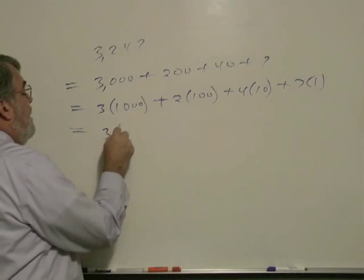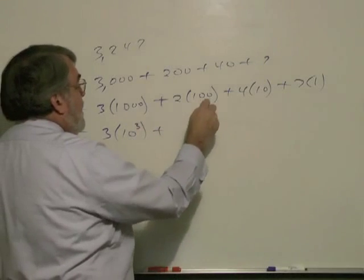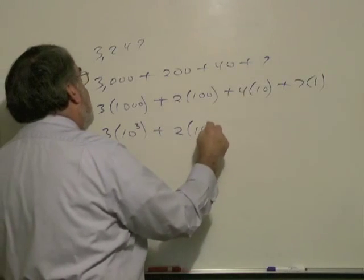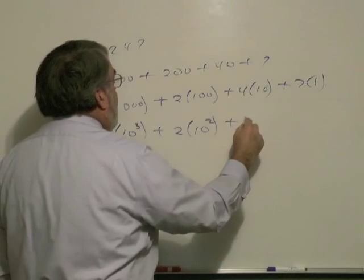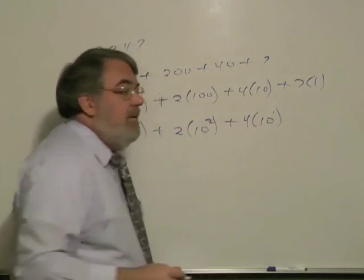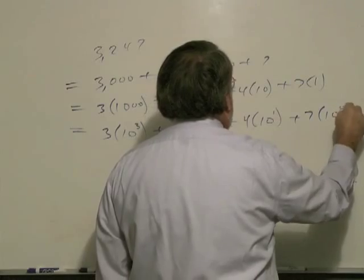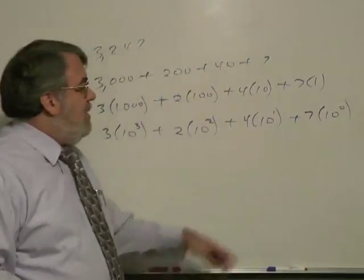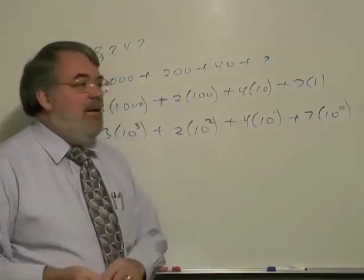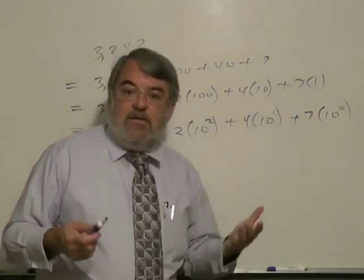1,000 is 10 to the third power. 100 is 10 to the second. We have 4 times 10 to the first. And 7 is 7 times 10 to the zero power. We normally don't write 10 to the zero, but you might recall from algebra that a number raised to zero power equals 1.